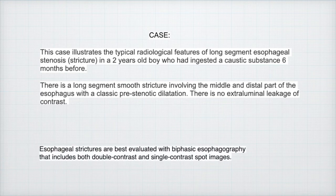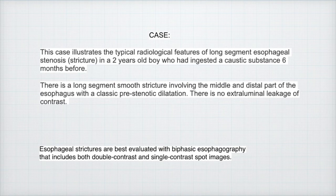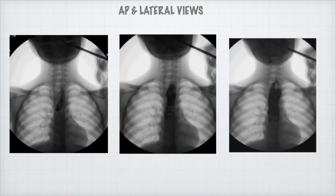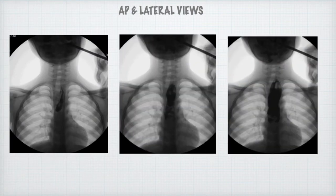This case illustrates the typical radiological features of a long segment esophageal stenosis. In a two-year-old boy who had ingested a caustic substance six months before, there is a long segment, smooth stricture involving the middle and distal part of the esophagus with a classic pre-stenotic dilatation. There is no extra-luminal leakage of contrast. We are going to see this in the AP view, where you can see the pre-stenotic dilatation.